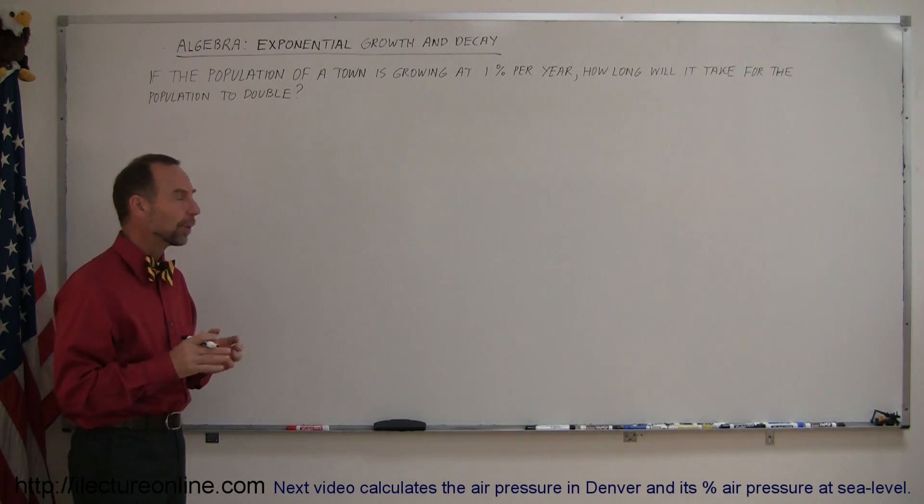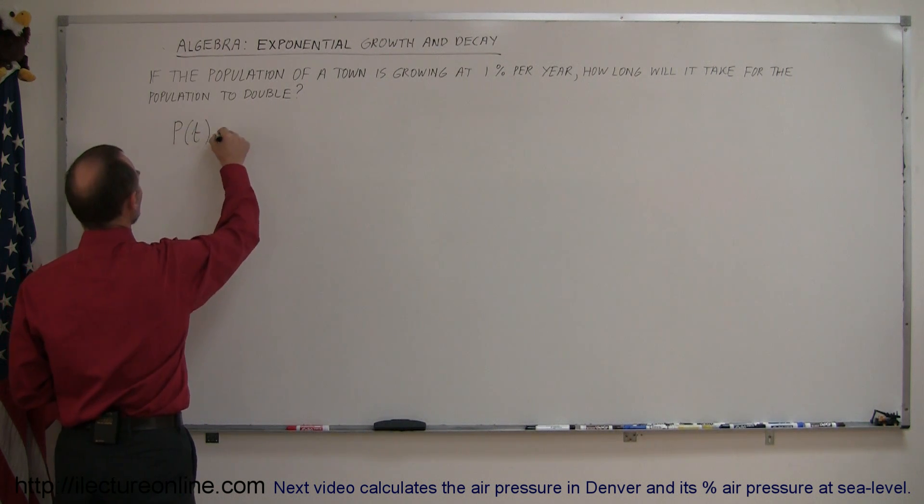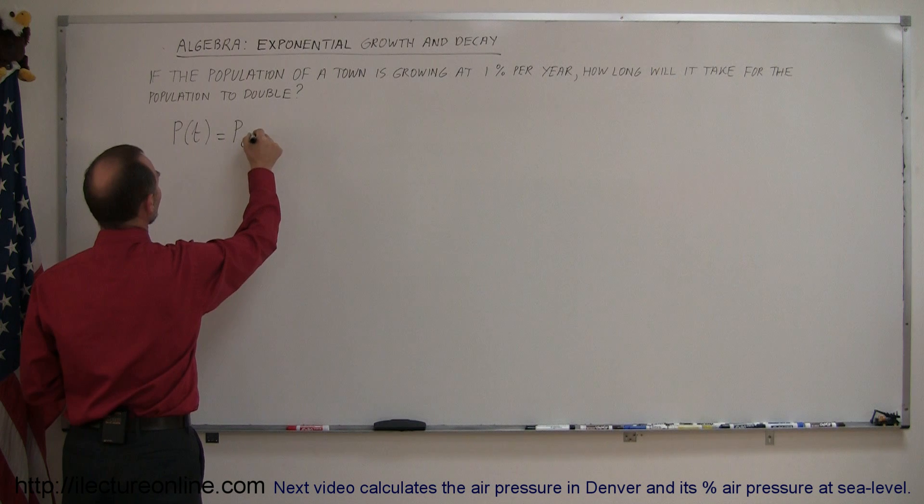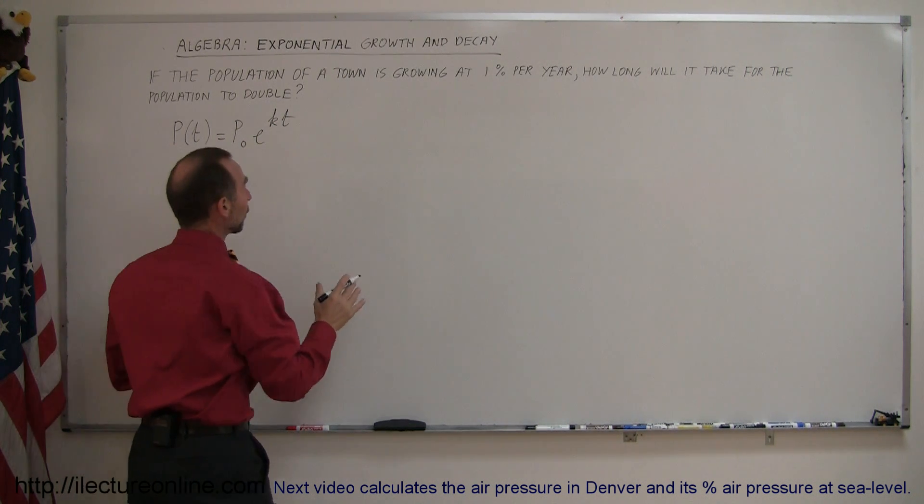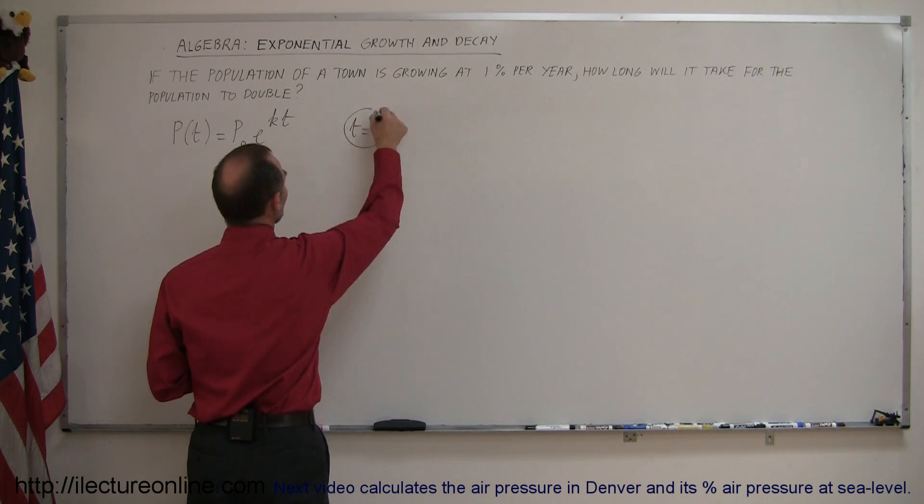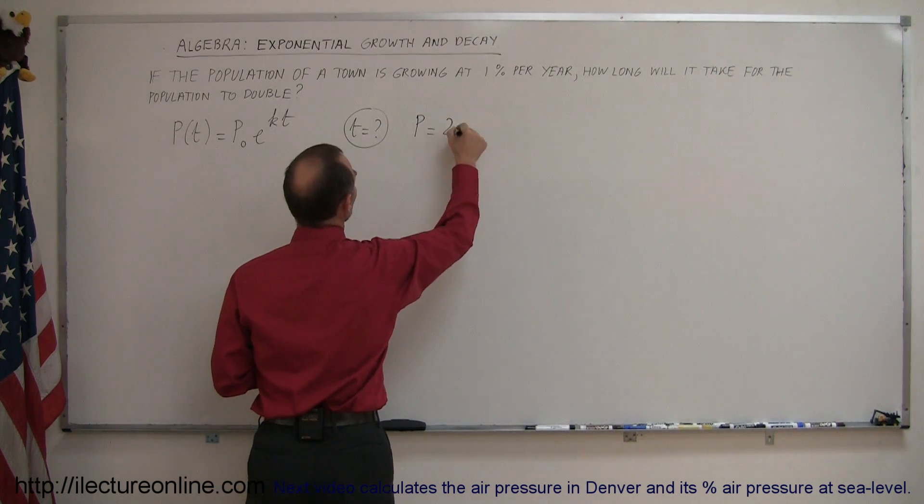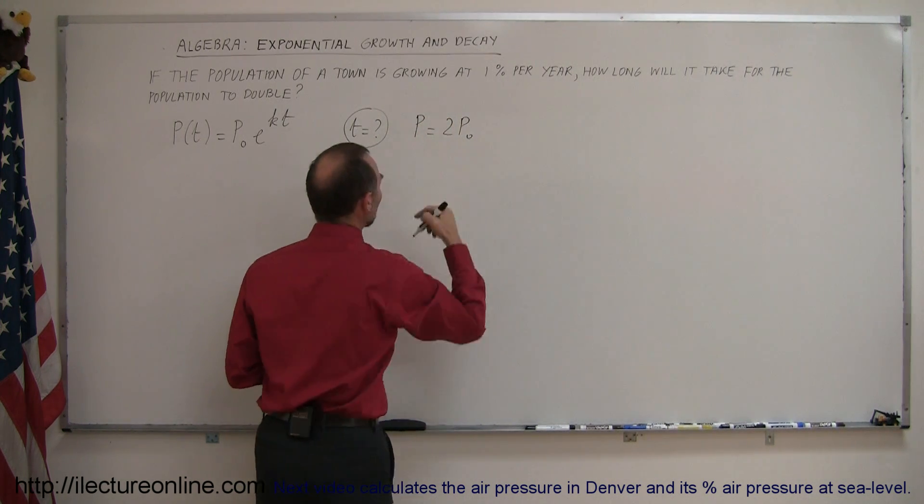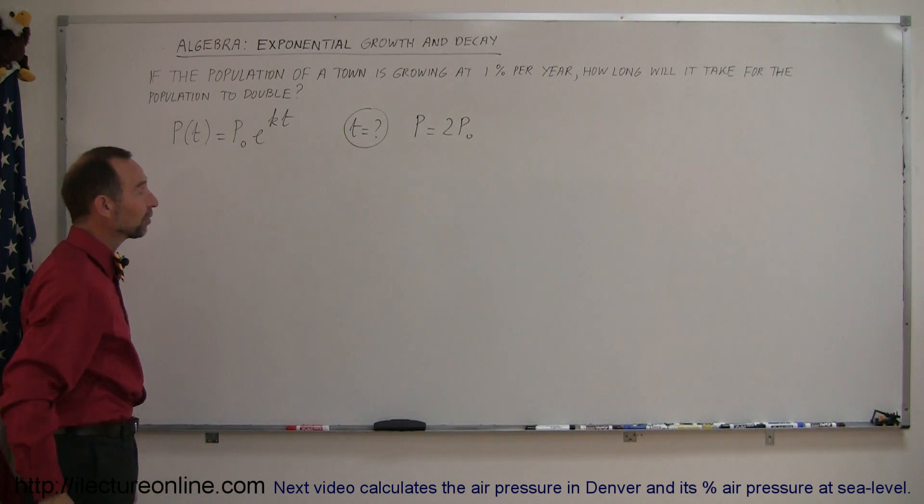Let's write down the equation that we normally use. We'll use the letter P. The population as a function of time is equal to the initial population times e to the k times t. And really what they're asking for here is, what will the time be equal to, how long will it take for the population to be twice the original population? That's what we call the doubling of the population, when the final population is twice the original population.